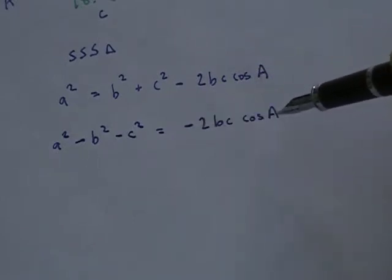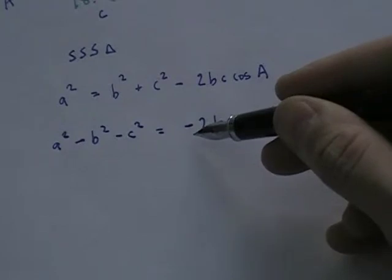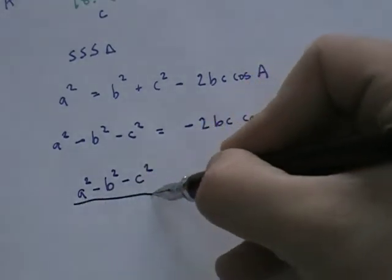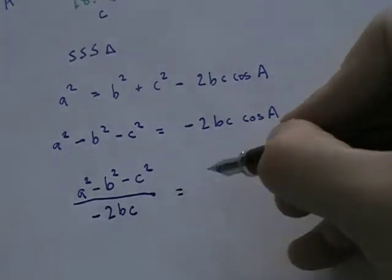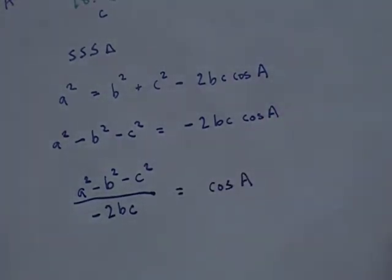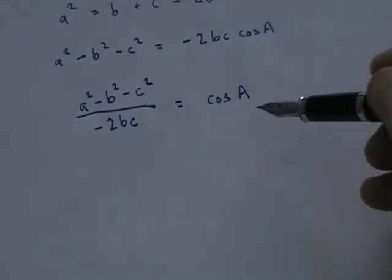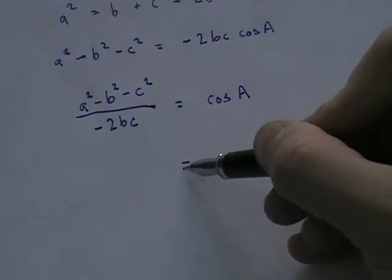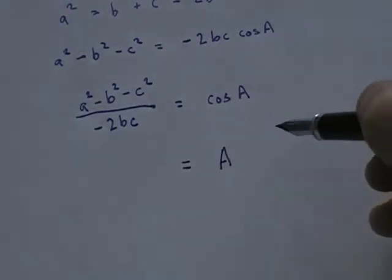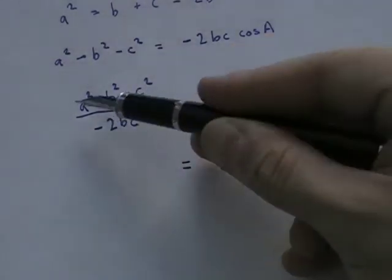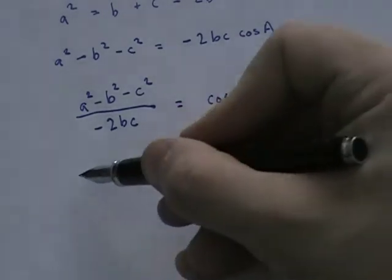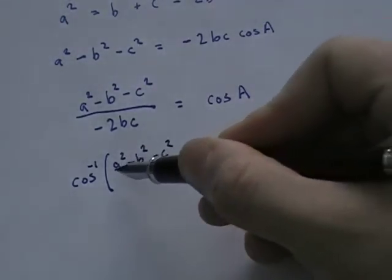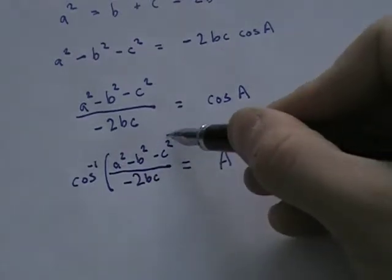Negative 2BC cosine A, this is all multiplicative, this is all multiplying. So I want to divide by this. If I divide both sides by negative 2BC, I end up with A squared minus B squared minus C squared over negative 2BC equals cosine of A. The last step is to get rid of the cosine function. To do that, we take the inverse cosine of both sides. Taking the inverse cosine of the right hand side, I end up with just the letter A. And if I take the inverse cosine of the left hand side, I end up with the inverse cosine of A squared minus B squared minus C squared over negative 2BC.